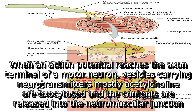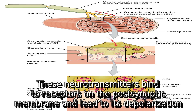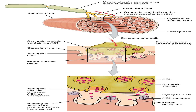When an action potential reaches the axon terminal of a motor neuron, vesicles carrying neurotransmitters — mostly acetylcholine — are exocytosed and the contents are released into the neuromuscular junction. These neurotransmitters bind receptors on the postsynaptic membrane and lead to its depolarization.